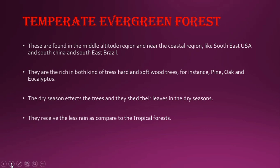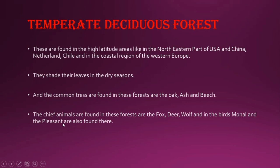Now let's talk about the temperate deciduous forest. These forests are generally found in high latitude areas like the northeastern part of USA, China, Netherlands, Chile, and the coastal region of Western Europe. They shed their leaves in the dry seasons, and the common trees found here are oak and beech.